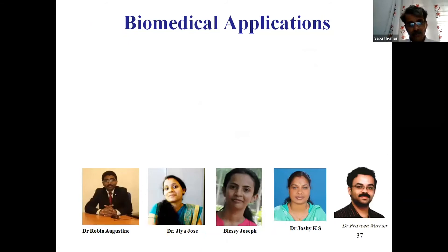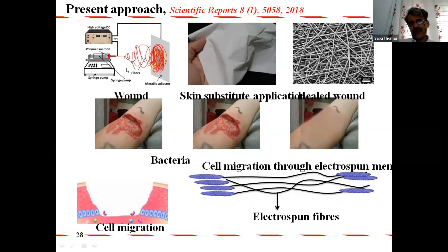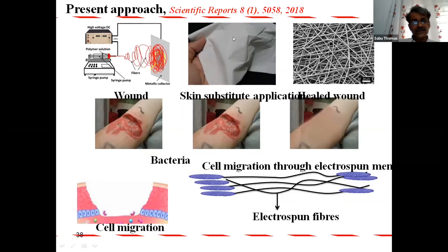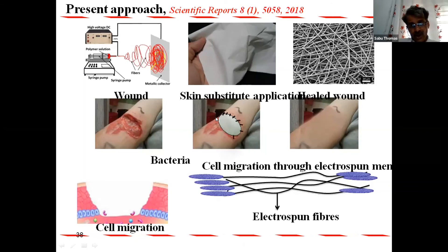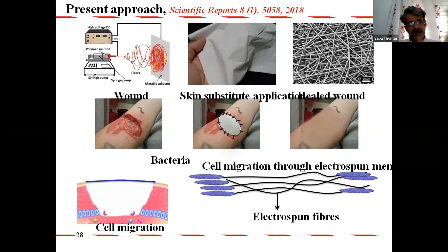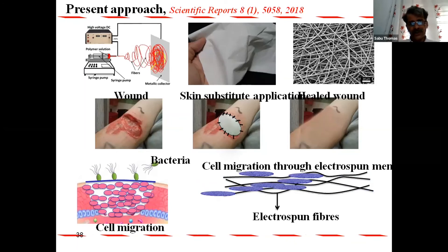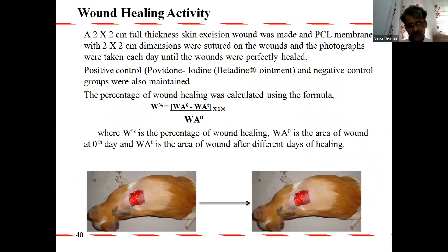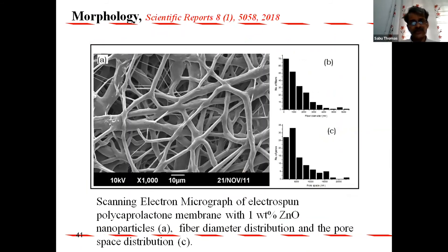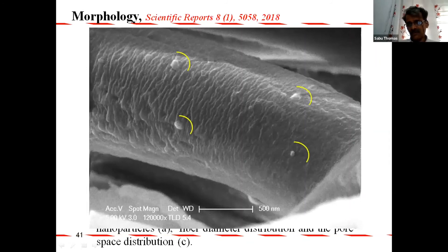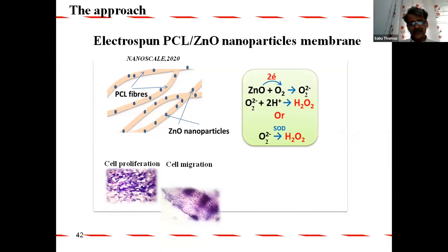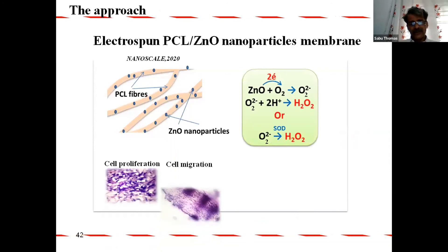In biomedical applications we do a lot of electrospinning. We are able to make nanofiber mats excellent for wound healing — you can see the artificial wound we made and how it is closed by this scaffold. We also work with guinea pigs for in vivo studies and see magnificent healing activity. Adding just 1% zinc oxide nanoparticles makes the healing activity extremely efficient. We observe very good cell proliferation, cell migration, and angiogenesis.